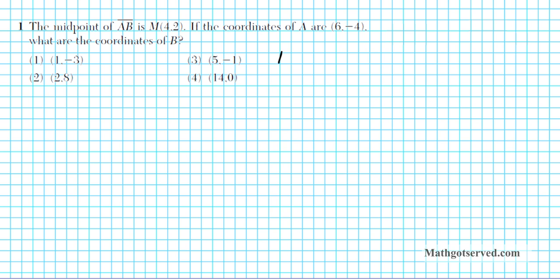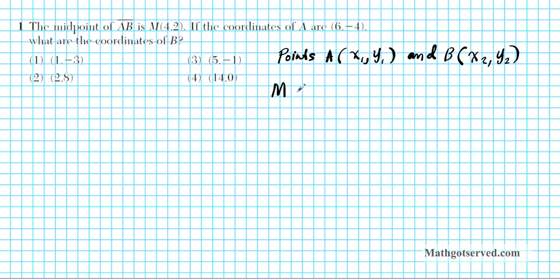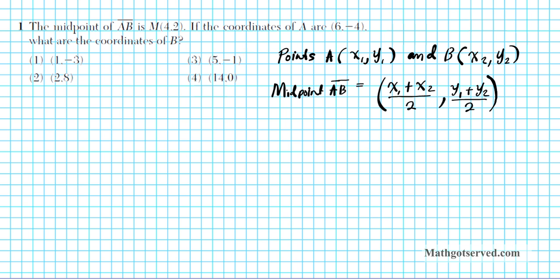Let's say we have two points, A and B. Point A is given by (x1, y1) and point B is given by (x2, y2). Then the midpoint M of segment AB is given by the equation: x1 plus x2 divided by 2 — the average of the x's gives you the x-coordinate of the midpoint. Similarly, y1 plus y2 over 2 gives you the y-coordinate of the midpoint. That's how you calculate the midpoint.